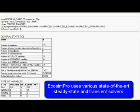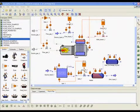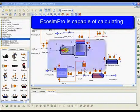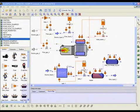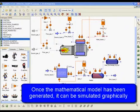EcosimPro uses various state-of-the-art steady state and transient solvers internally. EcosimPro is capable of calculating transient steady state parameterization optimization cases. Once the mathematical model has been generated it can be simulated graphically.